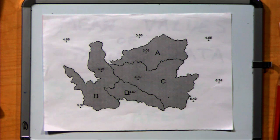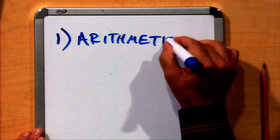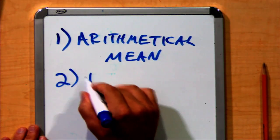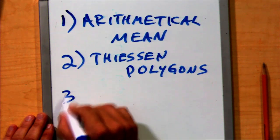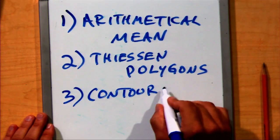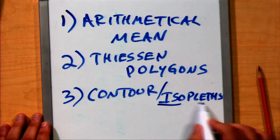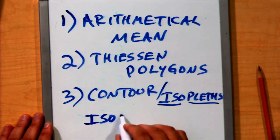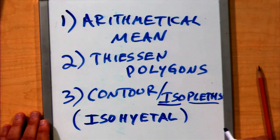There are multiple ways to approach this problem. Here are three standard methods. The first is the simplest: the arithmetical mean. The second uses Thiessen polygons. And the third method is a contour method using isopleths. Isopleths is a general term for same values. When referring to precipitation, this would be the isohyetal method, where hyetal means the measure of rainfall.